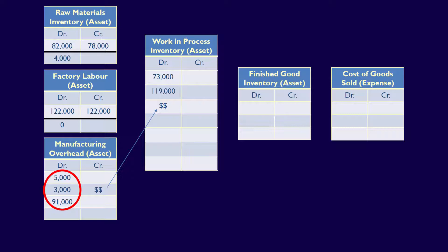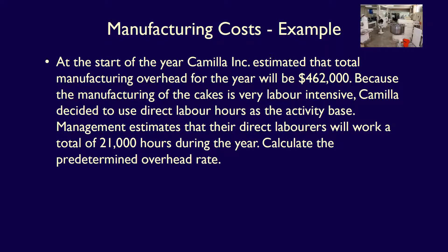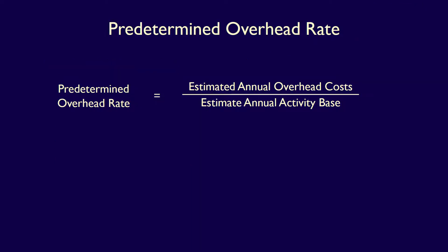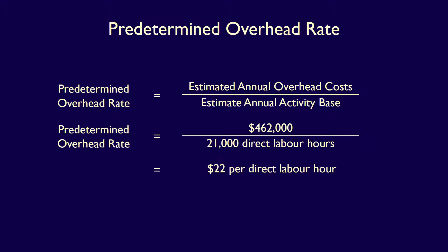Let's demonstrate this using Camilla Inc. At the start of the year, Camilla Inc. estimated that the total manufacturing overhead for the year will be $462,000. Because the manufacturing of the cakes is very labor-intensive, Camilla decided to use direct labor hours as the activity base. Management estimates that their direct laborers will work a total of 21,000 hours during the year. The formula is estimated annual overhead costs divided by the estimated annual activity base: $462,000 divided by 21,000 direct labor hours equals $22 per direct labor hour.